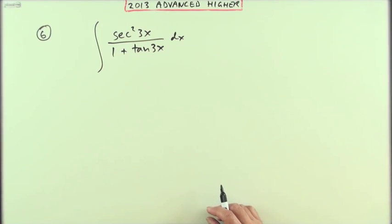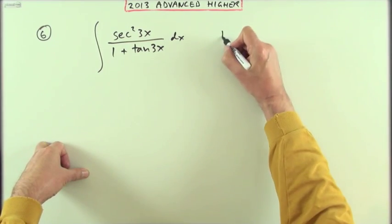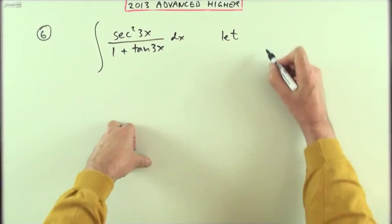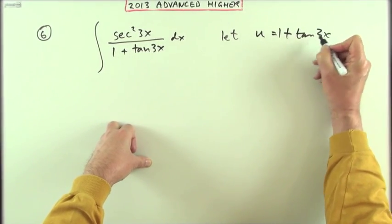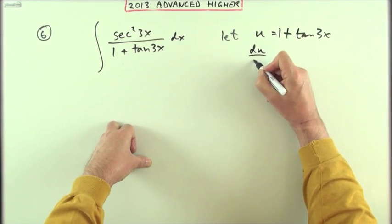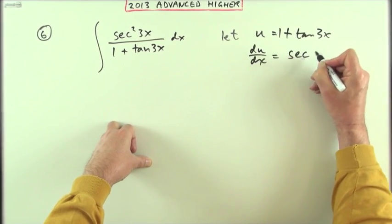But if you didn't recognize it could be done by inspection, or if you didn't wish to do that feeling you wouldn't gain the full four marks, then you'd probably do something like this. You'd probably say let u equal 1 plus tan 3x.